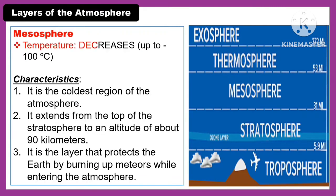Another layer of the atmosphere is the mesosphere. The temperature in the mesosphere decreases up to negative 100 degrees Celsius. The characteristics of the mesosphere are: first, it is the coldest region of the atmosphere; second, it extends from the top of the stratosphere to an altitude of about 90 kilometers; and third, it is the layer that protects the Earth by burning up meteors while entering the atmosphere.